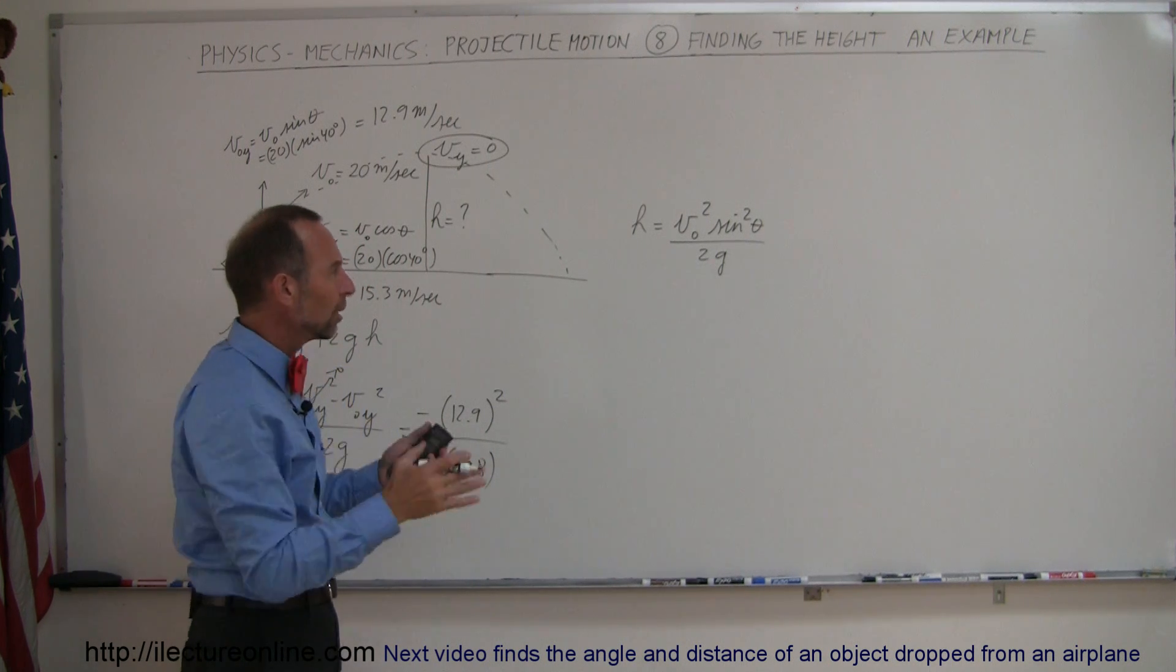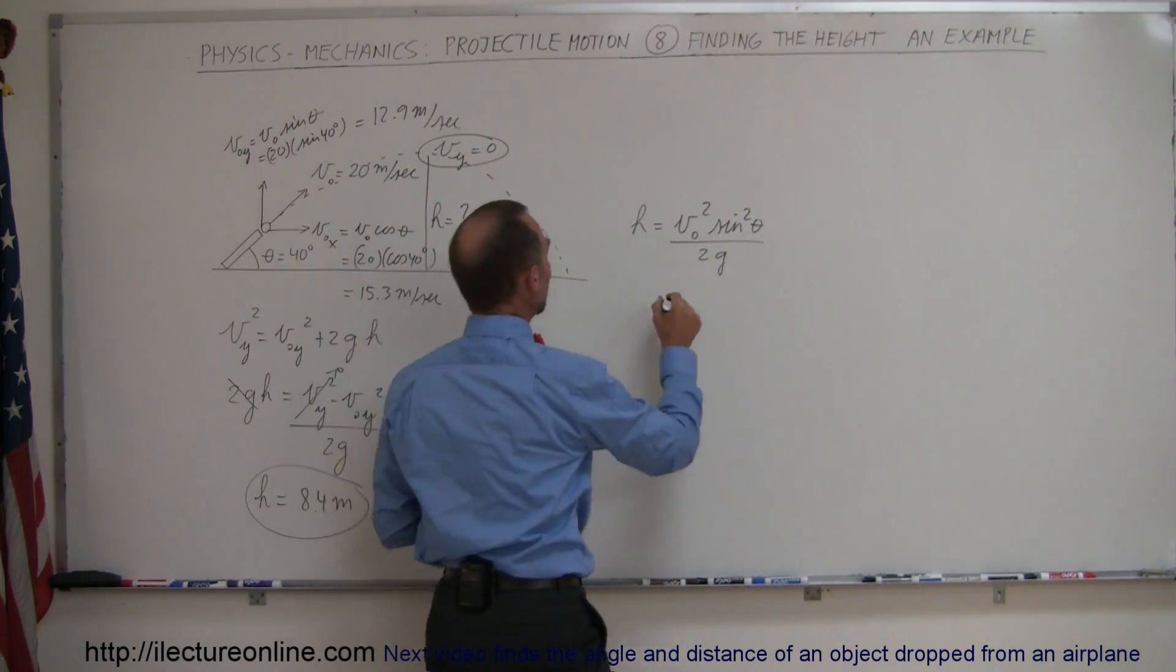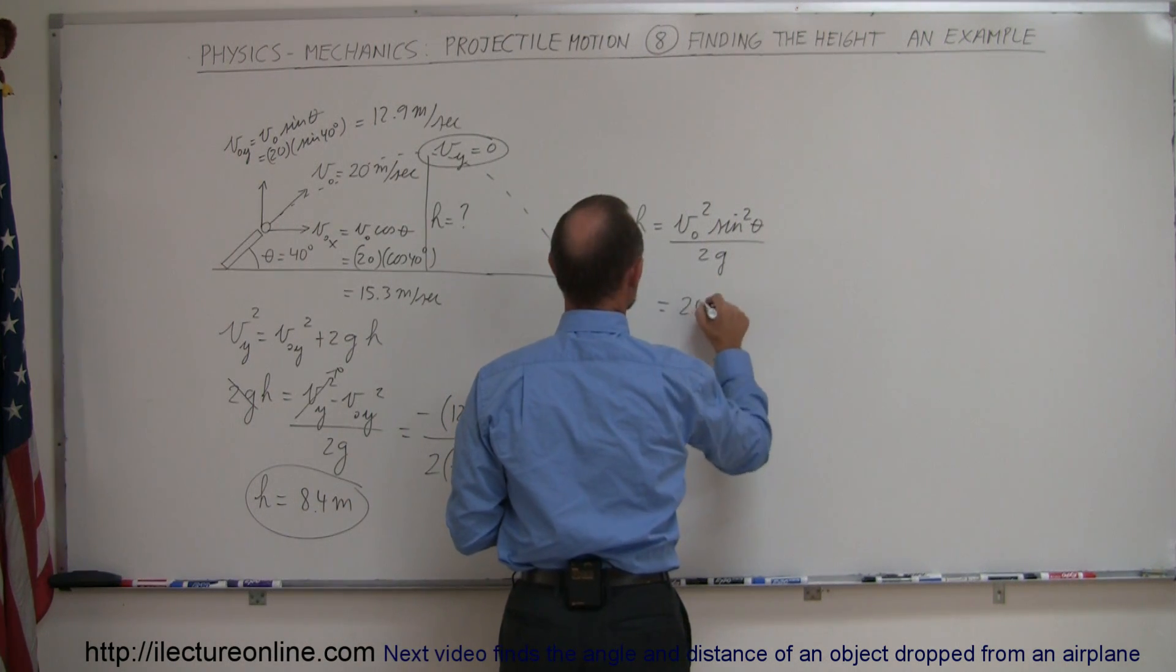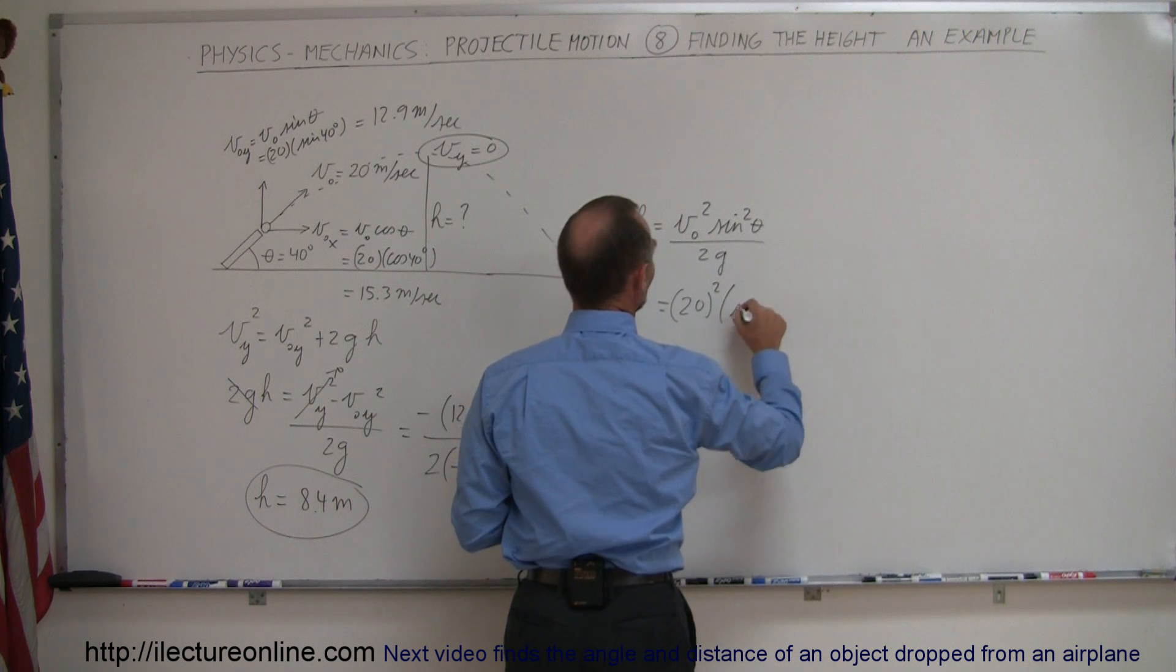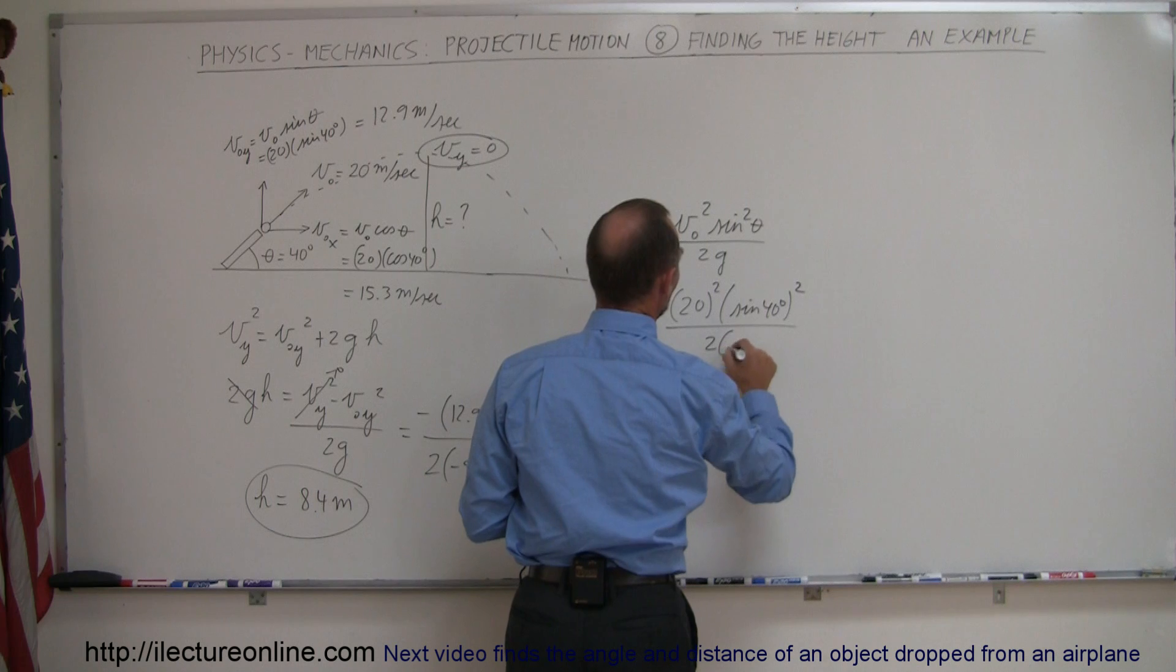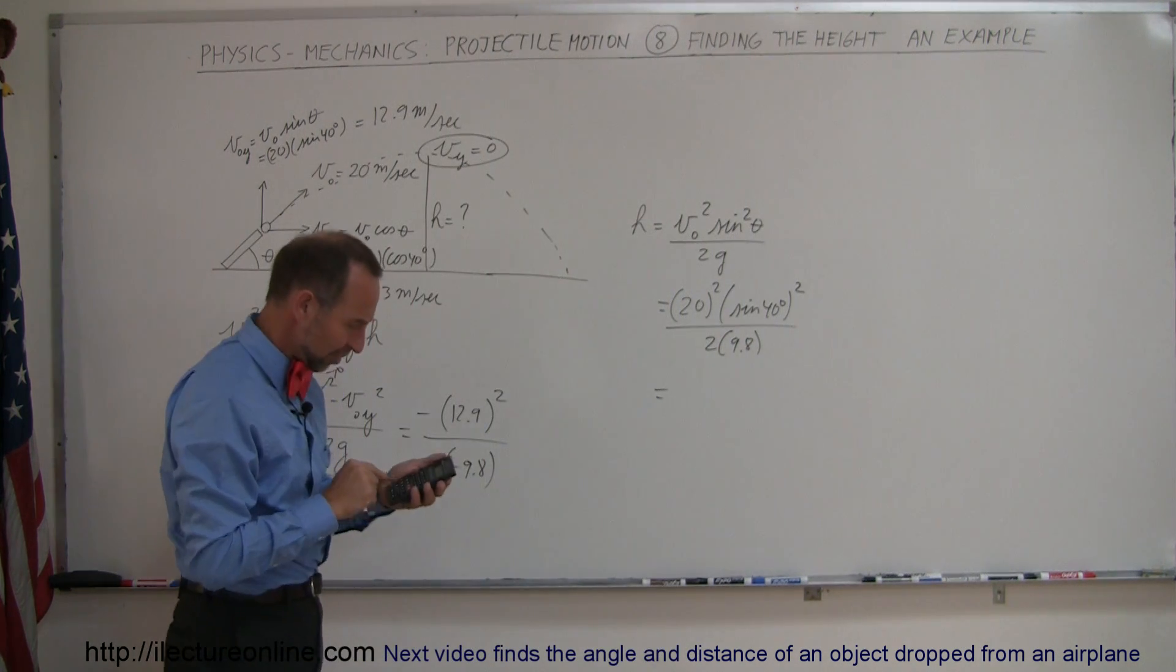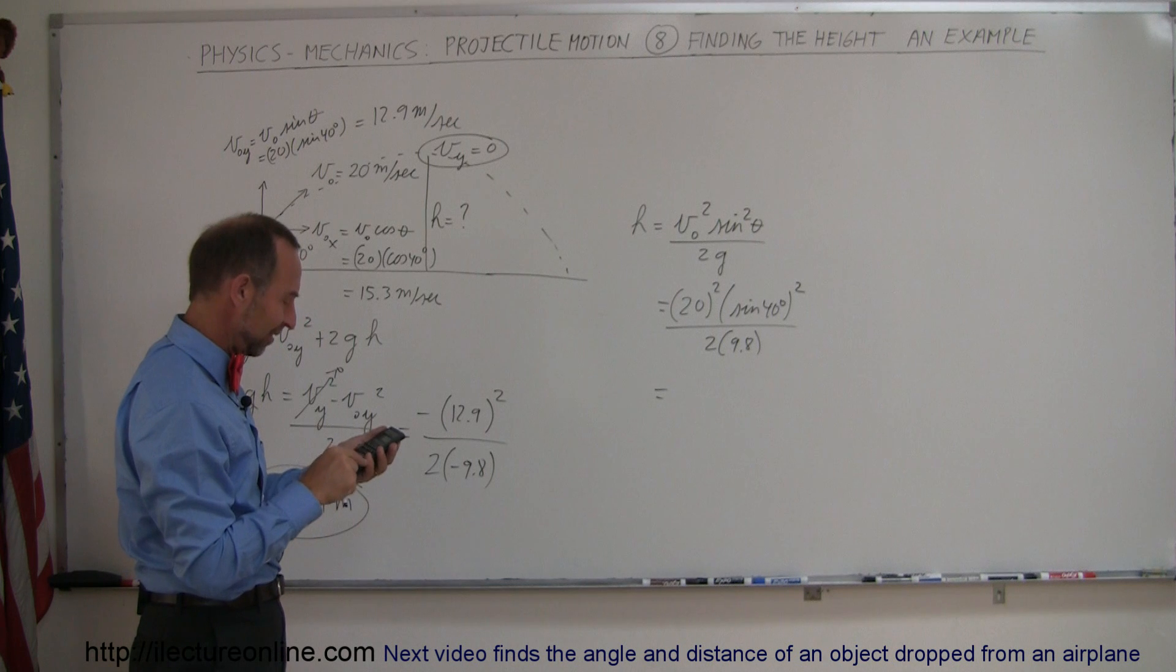Let's use that equation and see if we get the very same answer. So this would be equal to the initial velocity squared which was 20 squared times the sine of 40 degrees squared divided by 2 times 9.8. Let's see if we get the same result. It's always neat to try two different ways and see if we get the same result.